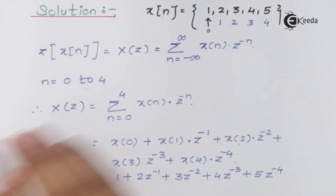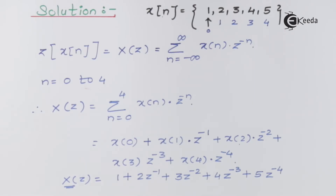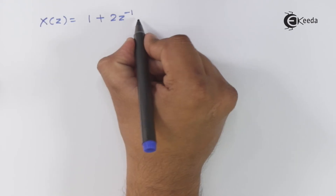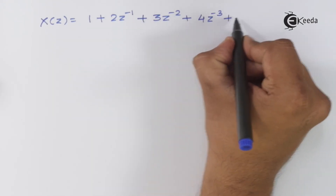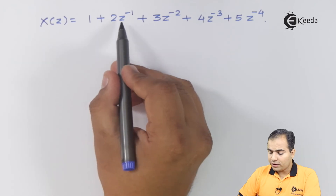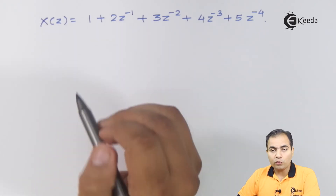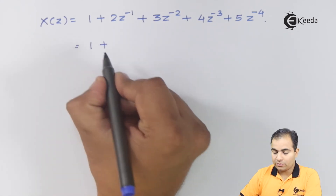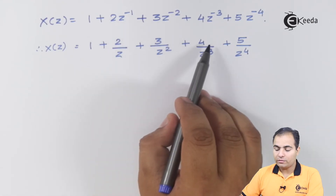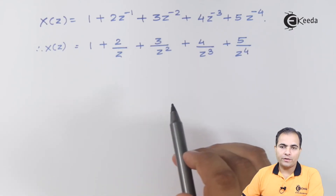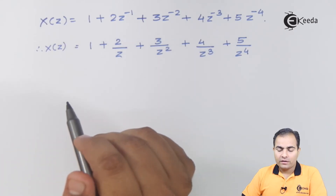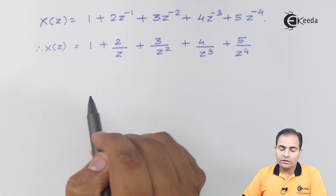This expression is the Z-transform of the given function. We can rewrite z^(-1) as 1/z, so X(z) becomes: 1 + 2/z + 3/z² + 4/z³ + 5/z⁴. Now we need to find the ROC. To identify the ROC for a given X(z), we simply substitute z=0 and z=infinity into the expression.